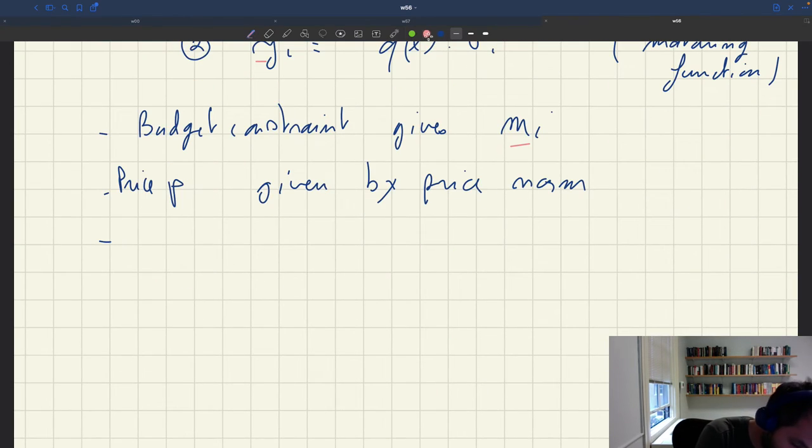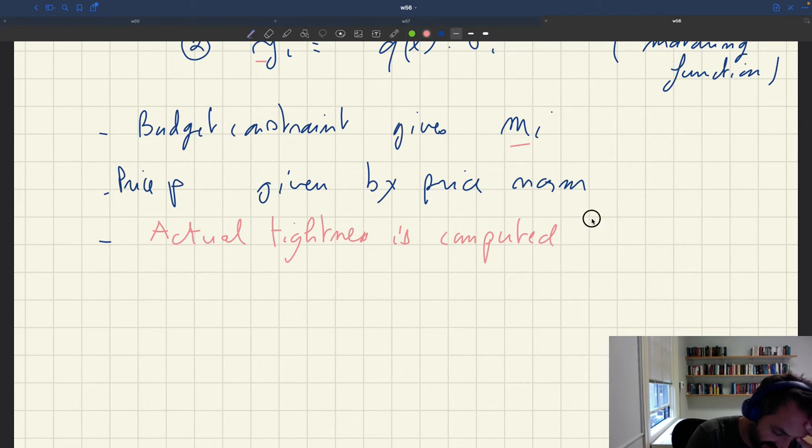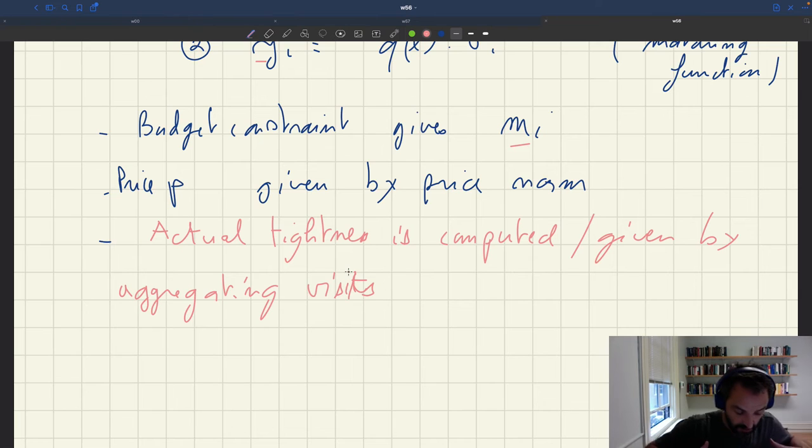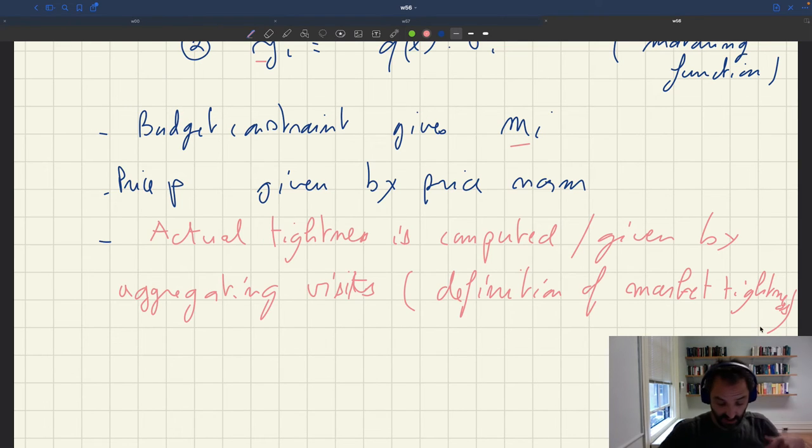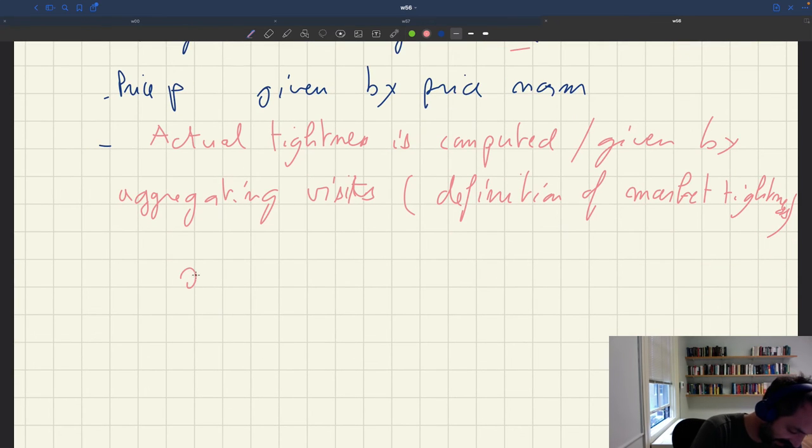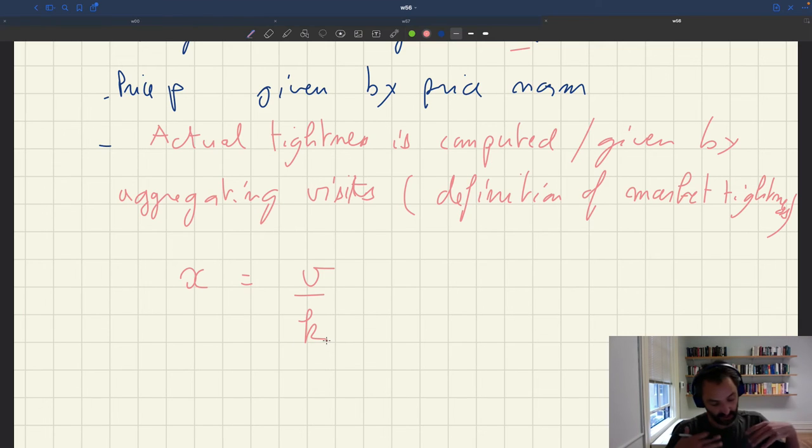The actual tightness. The actual tightness is computed, given by, aggregating the visits. So this is just basically the definition of the market tightness. Because here we said that household takes the tightness as given, but we haven't even said how this tightness is actually computed, realized in the real world. So x, the tightness, is v divided by k.